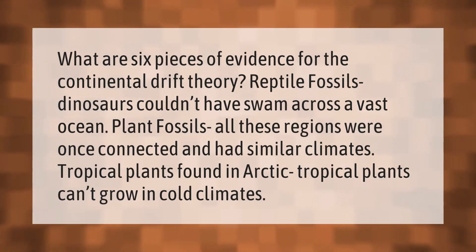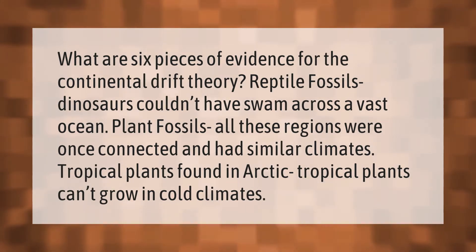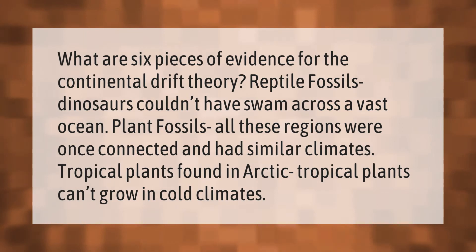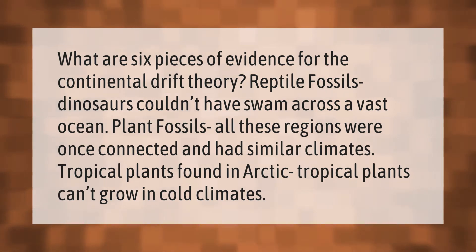What are six pieces of evidence for the continental drift theory? Reptile fossils — dinosaurs couldn't have swum across a vast ocean. Plant fossils show all these regions were once connected and had similar climates. Tropical plants found in the arctic indicate tropical plants can't grow in cold climates.